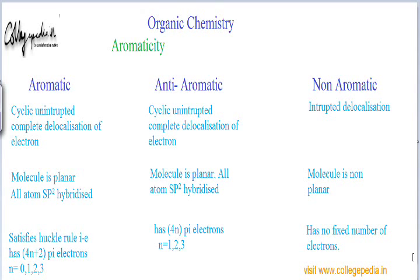First of all, I will give you the formal definition of an aromatic molecule. Aromatic molecules are, first of all, cyclic molecules. Aromaticity is a cyclic phenomenon — we don't look for aromaticity in acyclic compounds. This is the prerequisite: the molecule has to be cyclic.